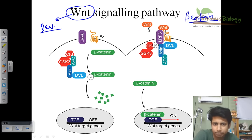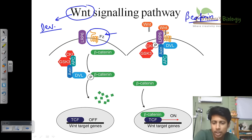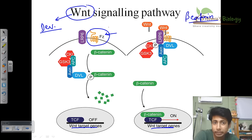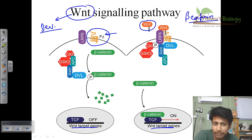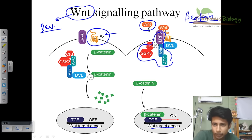There is a receptor designated as FZ, which stands for Frizzled — we will see that in more detail later. WNT as a signaling molecule will interact with the receptor Frizzled, and then it will involve a destruction box. This destruction box is made up of GSK3, Axin, APC, CKI, DBL, and other proteins — this is the destruction box or destructive sequence.